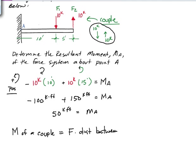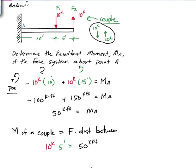So for instance, in this case, we have 10 kips times 5 feet is 50 kip feet. So the unique aspect of a moment of a couple is that it is constant about all points.